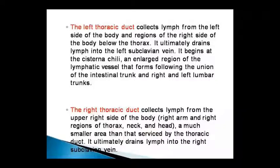The left thoracic duct collects lymph from the left side of the body and the regions of the right side below the thorax. The lymph from the left side is taken via the thoracic duct. Ultimately, the lymph is drained into the left subclavian vein. The thoracic duct starts from an enlarged region called the cisterna chyli, created from the right and left lumbar trunks.